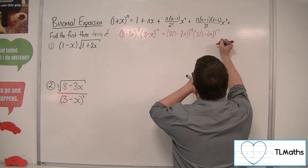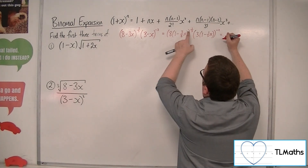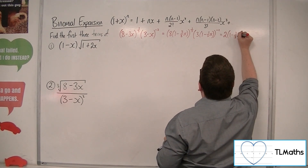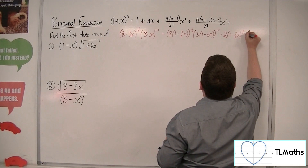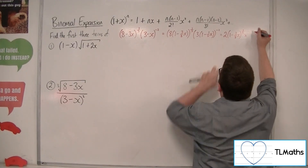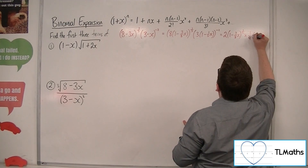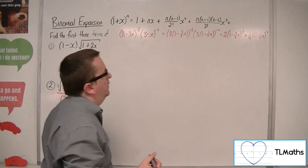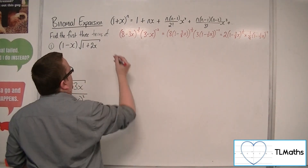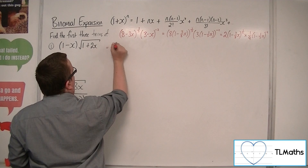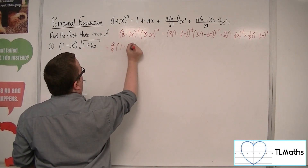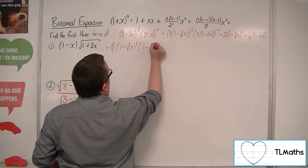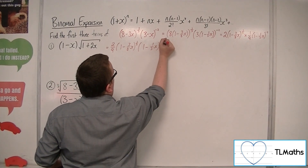So we get 8^(1/3) which is 2, times (1 minus three-eighths x)^(1/3), times 3^(−2) which is one-ninth, times (1 minus one-third x)^(−2). Bringing the 2 and the one-ninth to the front, we have two-ninths times (1 minus three-eighths x)^(1/3) times (1 minus one-third x)^(−2). We now need to expand both of these.